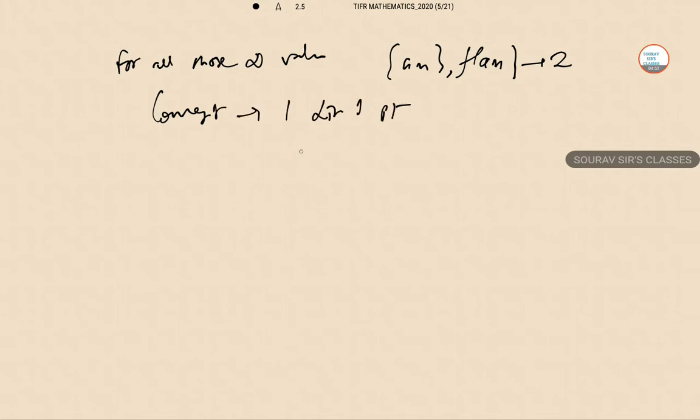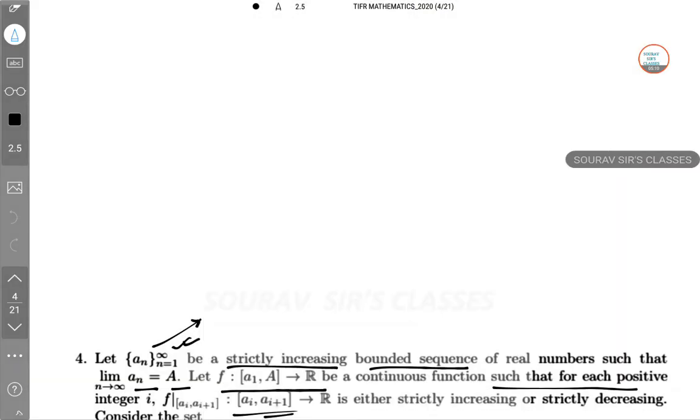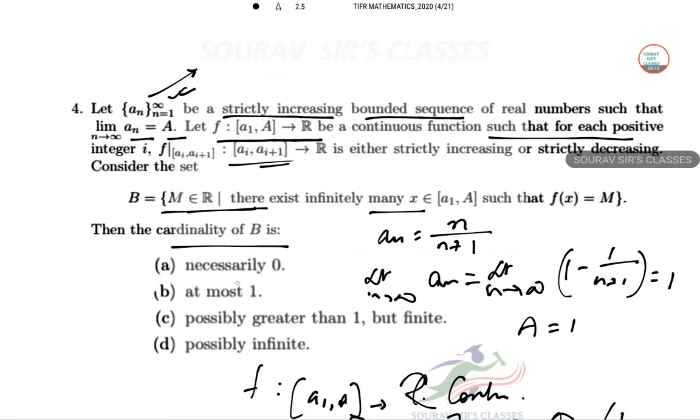Hence, there will be only one such x which is in this a 1 to a closed interval for which f x equal to m. So hence obviously option a is wrong, c is wrong, d is wrong and only the correct one is b at most 1.